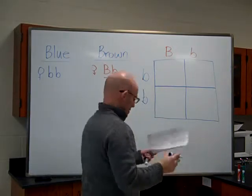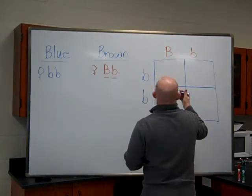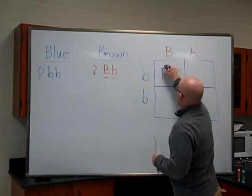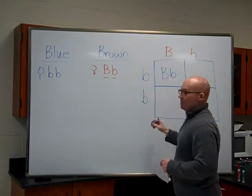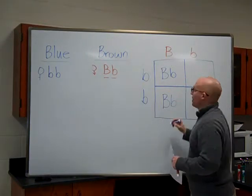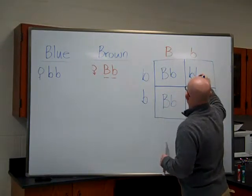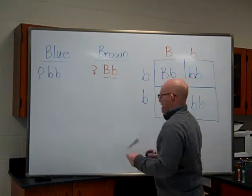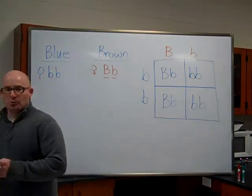So then we can do the cross. So when we do the cross, I'll just write it all in with blue. The first probable outcome is big B, little b. Second is also big B, little b. These two offspring on this side, we would expect to be little b, little b, little b.